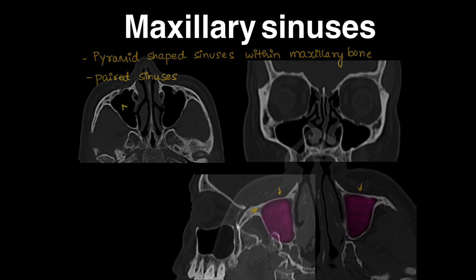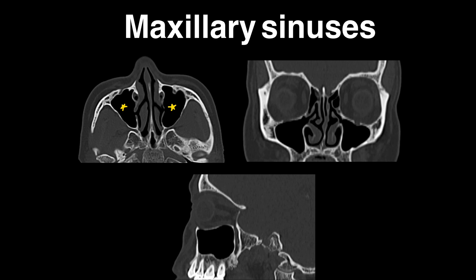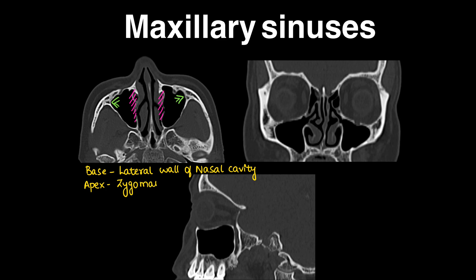Coming to their anatomy: the maxillary sinuses are pyramidal in shape, so they have a base and an apex. The base of the sinus is formed by the lateral wall of the nasal cavity, and the apex of the maxillary sinus is towards the lateral aspect, formed by the zygomatic bone.